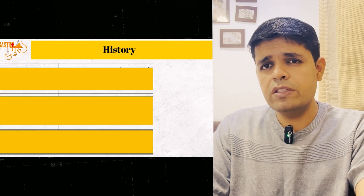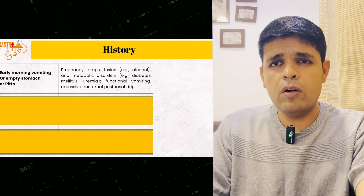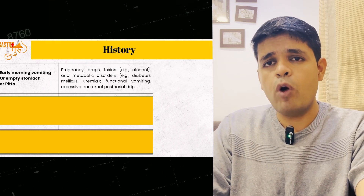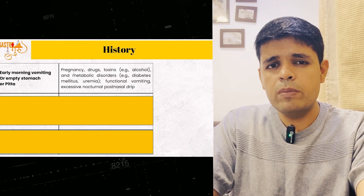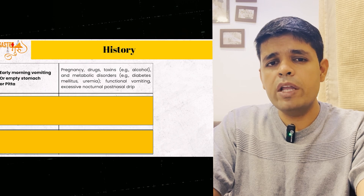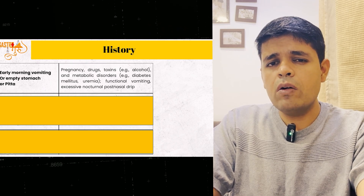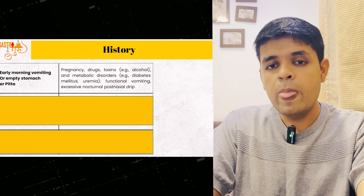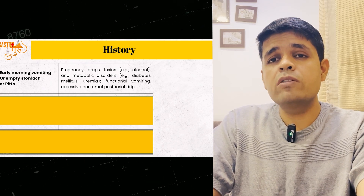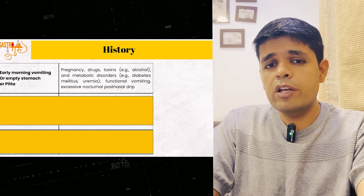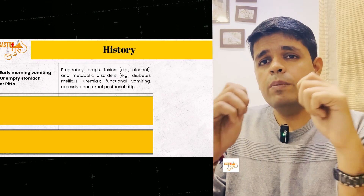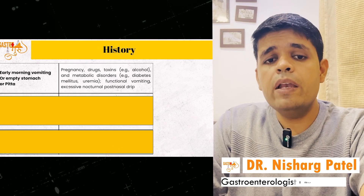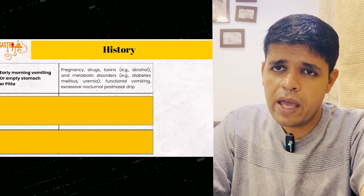Certain characteristic features in history: early vomiting or vomiting on an empty stomach — common causes include hormonal problems (e.g., early morning vomiting in pregnancy), toxins (alcohol or drug-induced vomiting), metabolic and hormonal problems (early diabetes or uremia), functional vomiting in patients with psychogenic comorbidities like anxiety, depression, or chronic nausea vomiting syndrome, and patients with allergic problems or excessive post-nasal drip can also have early morning vomiting.